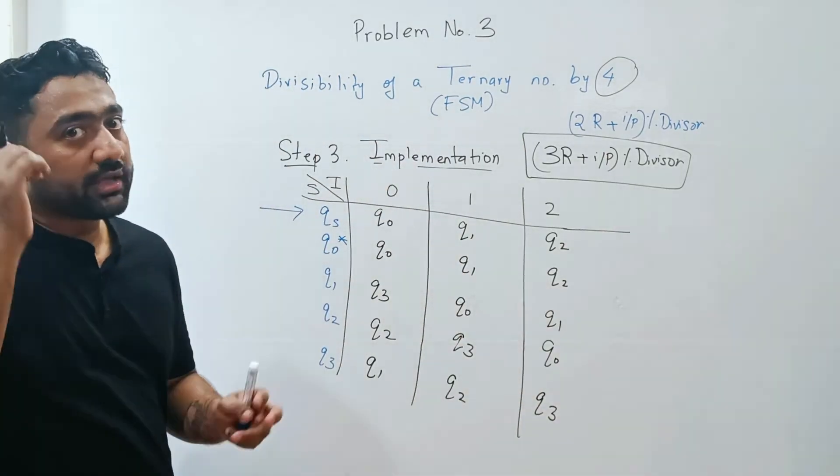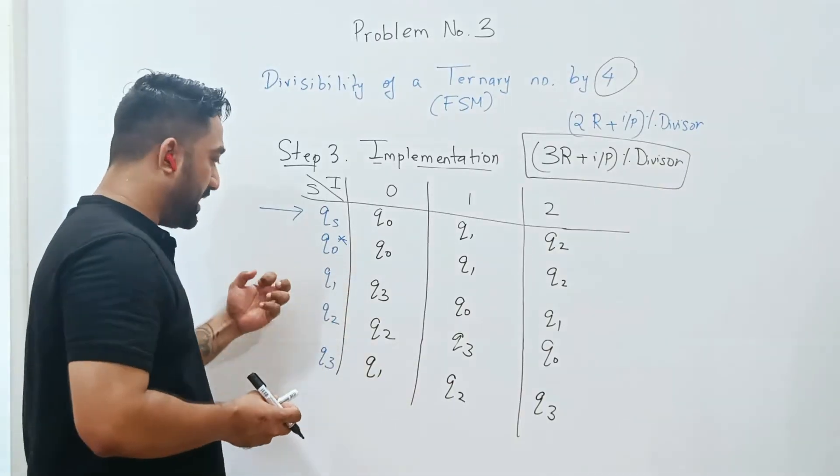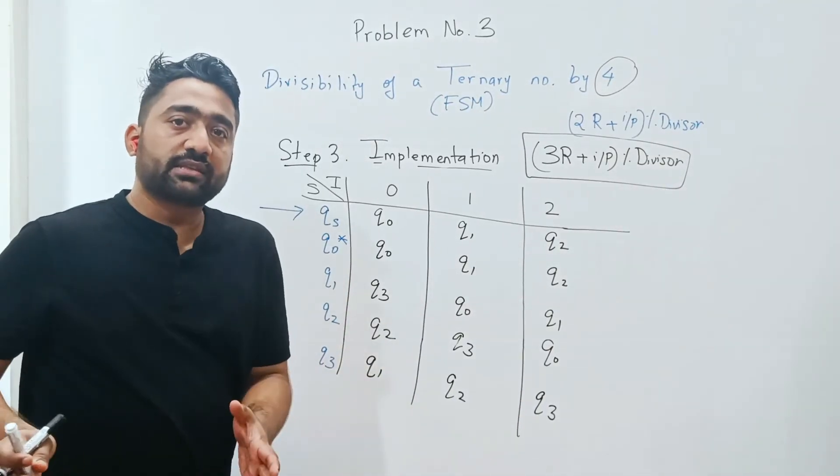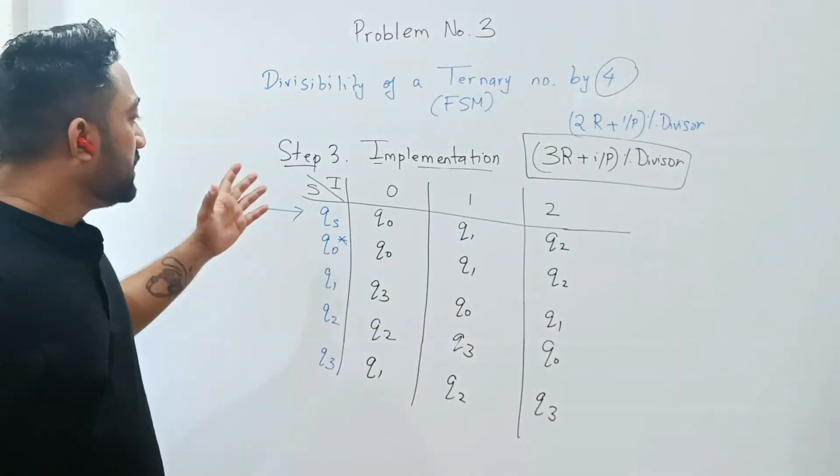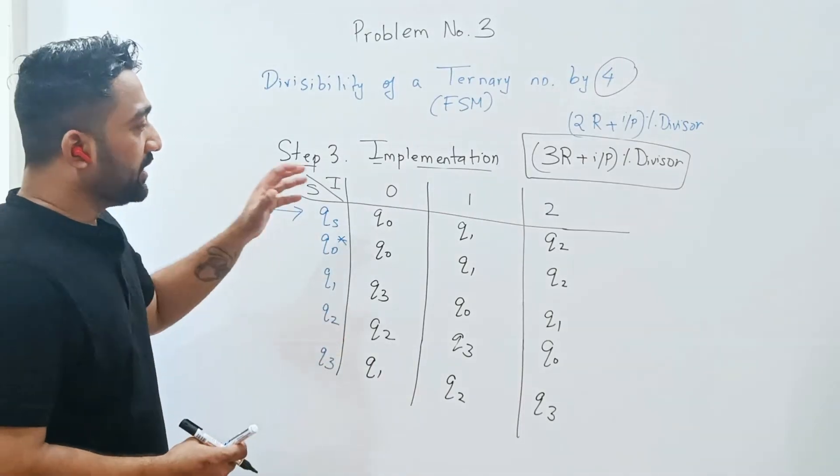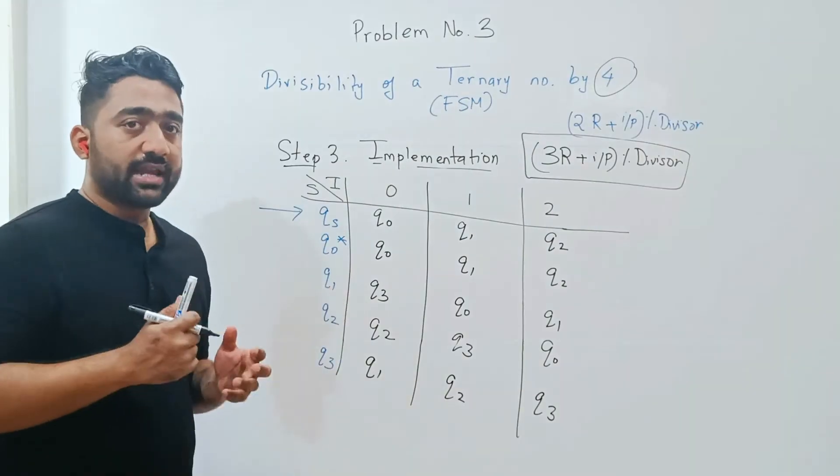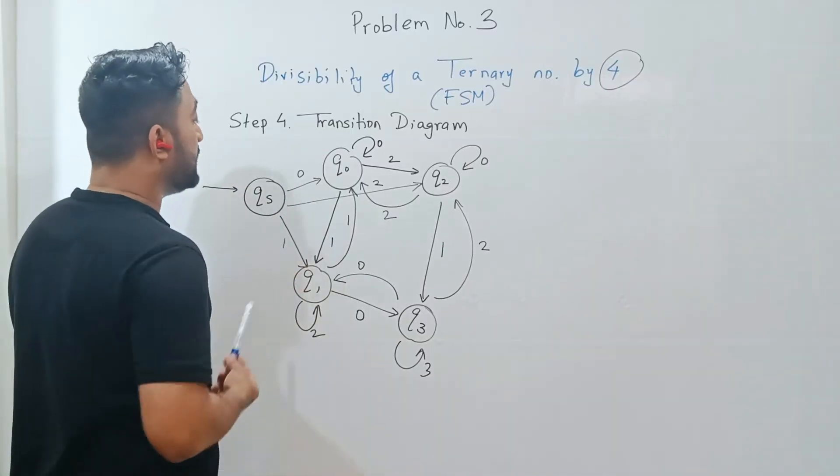I hope you got the understanding of how to create this table, because this is the most important step after logic. Once this is done, once your table is created, you can construct the diagram. The diagram is very simple. Just have a look - every state has 3 transitions emerging.